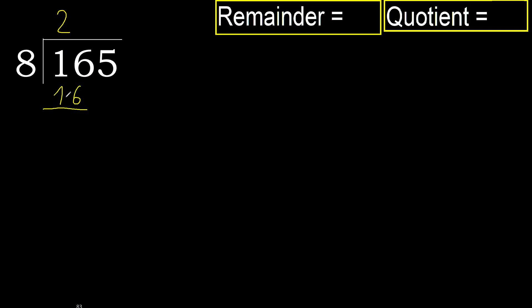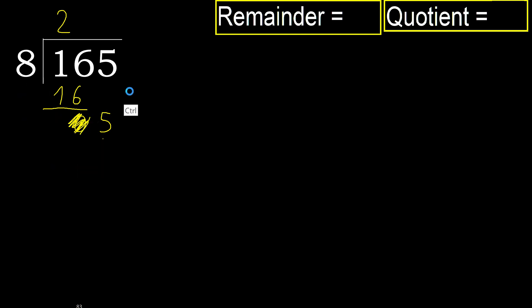16 minus 16 is 0. Next, eliminate 0 on this side — bring down 5. But 5 is less than 8, therefore next.